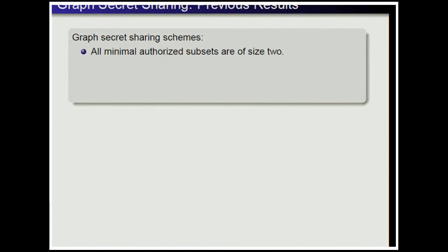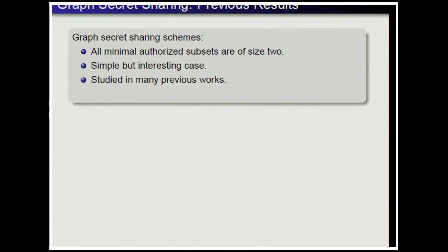In a graph secret sharing scheme, all minimal authorized subsets are of size 2. It is a simple case, but also an interesting one that has been studied in many previous works. In some of them, it has been the first step for obtaining more general results.